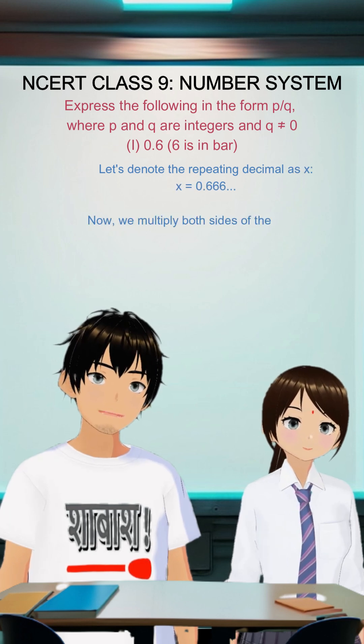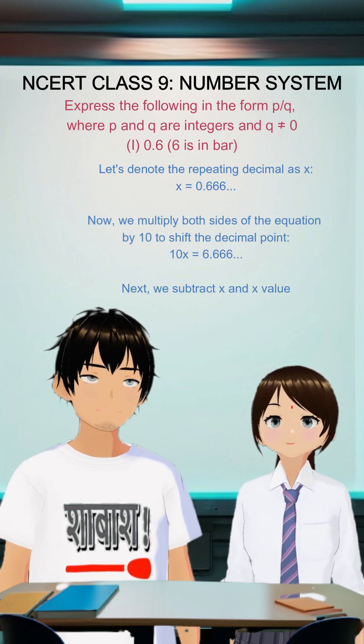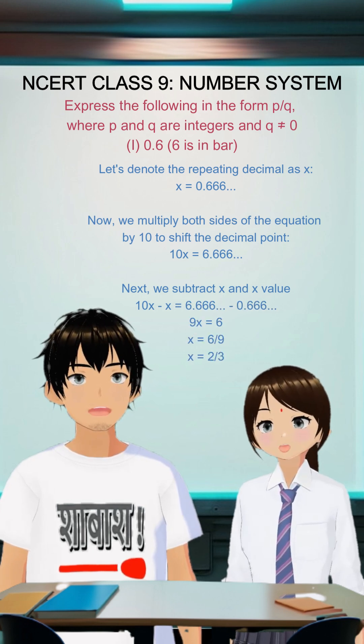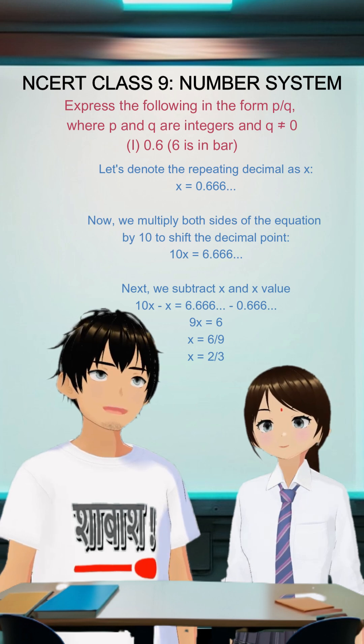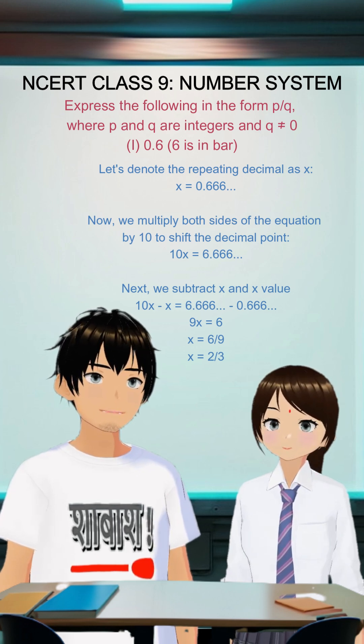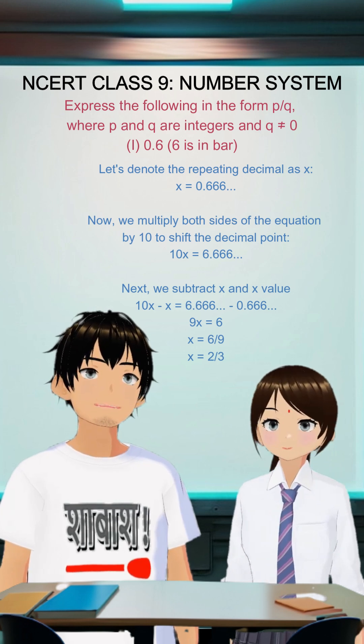Okay, let's denote the repeating decimal as X. X is equal to 0.666... Now, we multiply both sides of the equation by 10 to shift the decimal point. 10X is equal to 6.666...